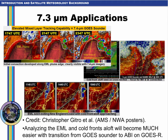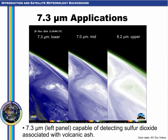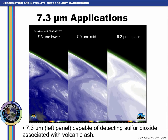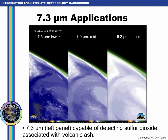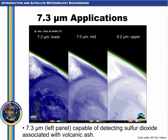The 7.3 micron band has a number of applications such as cold fronts aloft and elevated mixed layer identification that we'll discuss in more detail later in this course. Chris Gitro has done a lot of work on making use of the GOES Sounder 7.4 micron band. Identification of these features in the 7.3 micron band on the GOES-R ABI will be much easier due to the higher spatial and temporal resolution. The 7.3 micron band will be the only ABI water vapor band capable of detecting sulfur dioxide associated with volcanic ash. The animation shows the three water vapor channels from Himawari for the Pavlov volcanic eruption in the Aleutian Islands — the 7.3 micron band shows the volcanic ash plume the most clearly, and only the 7.3 micron band shows a contribution from sulfur dioxide.